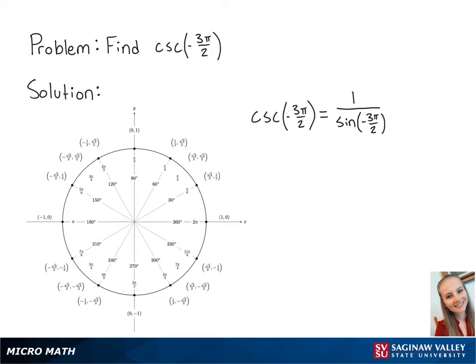Looking at the unit circle, if we want to find negative 3 pi over 2, we're going to start at 0 and travel backward a distance of 3 pi over 2.